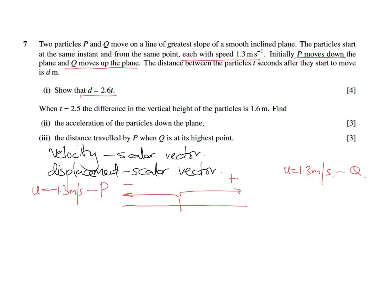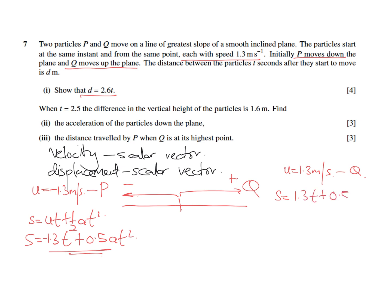To find the displacement covered after T seconds, we use S = UT + ½AT². For P, moving in the negative direction, S_P = −1.3T + 0.5AT². For Q, moving in the positive direction, S_Q = 1.3T + 0.5AT².